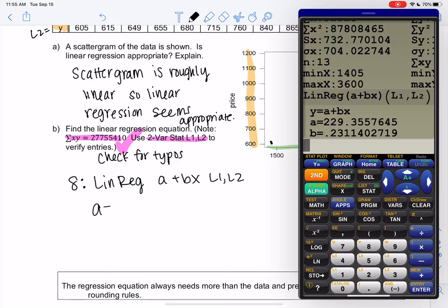And we get A is 229,355,7645, and B is 2311,402. I'm writing everything down and then we'll round before we write the equation. 402,719.